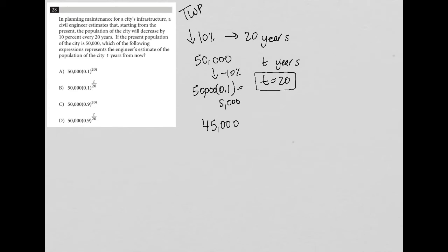So now I can use T equals 20 and I can use the population starting out at 50,000 and I can use the understanding that I expect the answer I get from the correct expression to give me 45,000 after 20 years in order to test out each answer choice. So for instance, answer choice A,